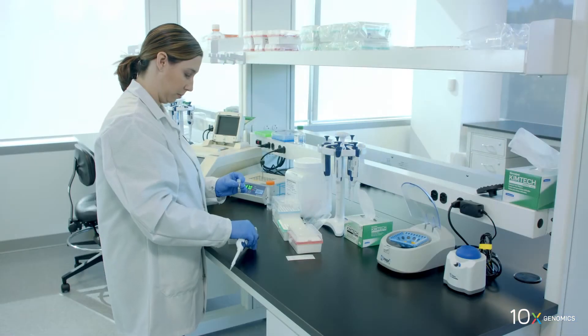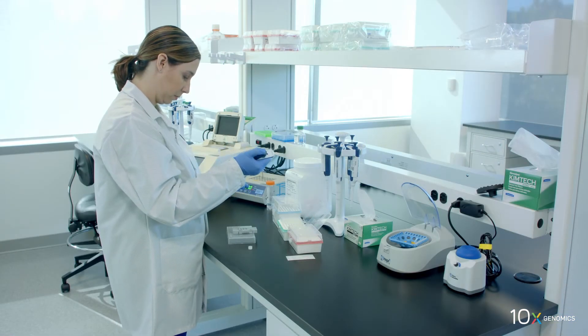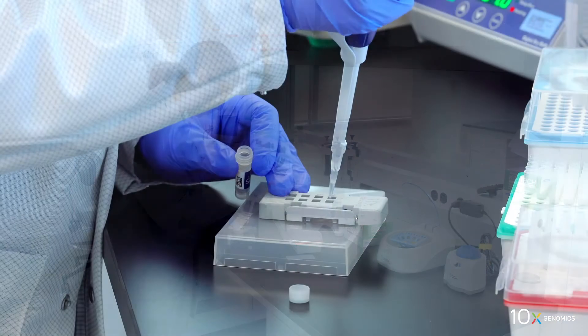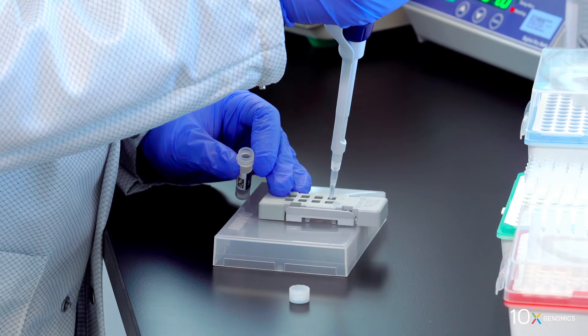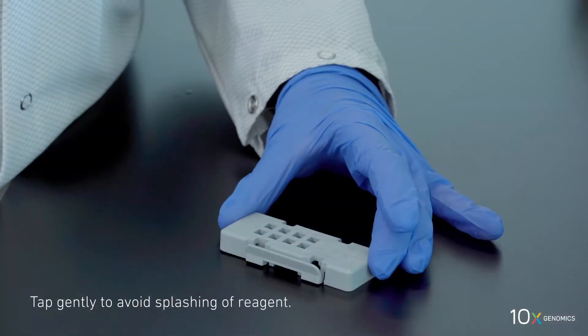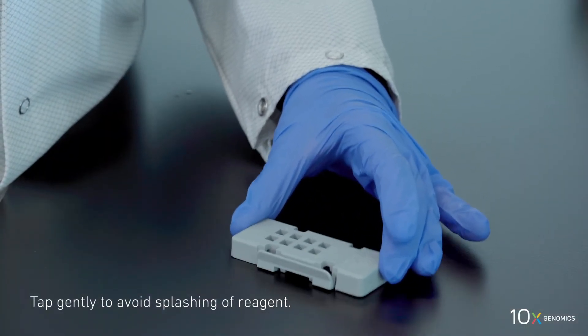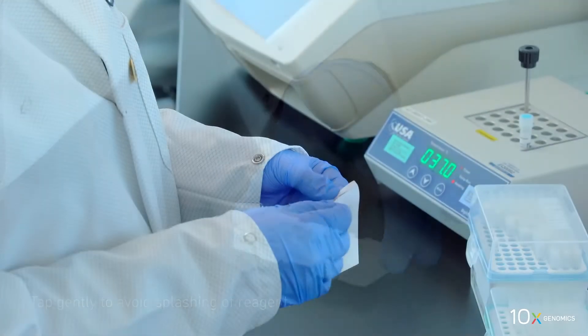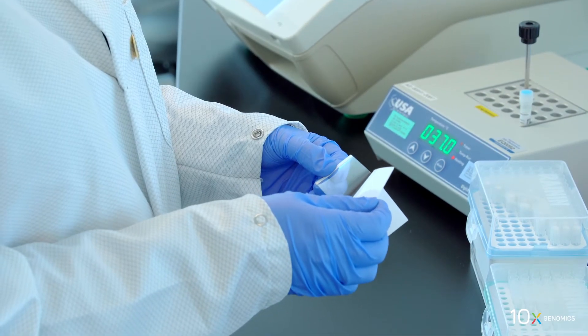Add 70 microliters resuspended permeabilization enzyme along the side of the wells to uniformly cover the tissue sections without introducing bubbles. The slide cassette may be tapped gently to ensure uniform coverage. Remove the back of the adhesive slide seal.